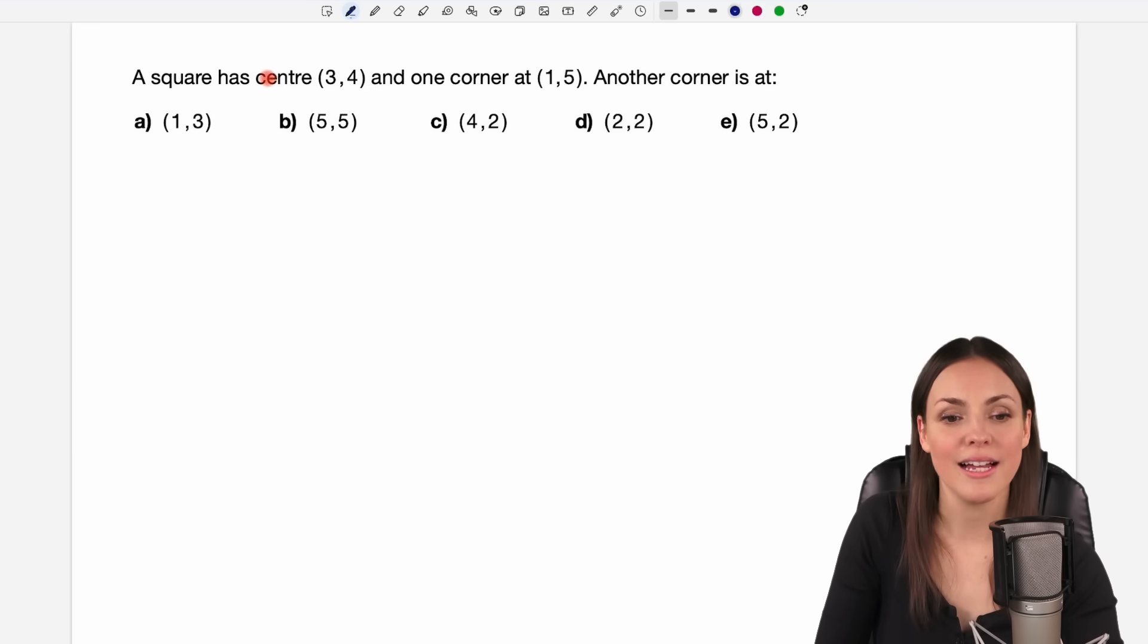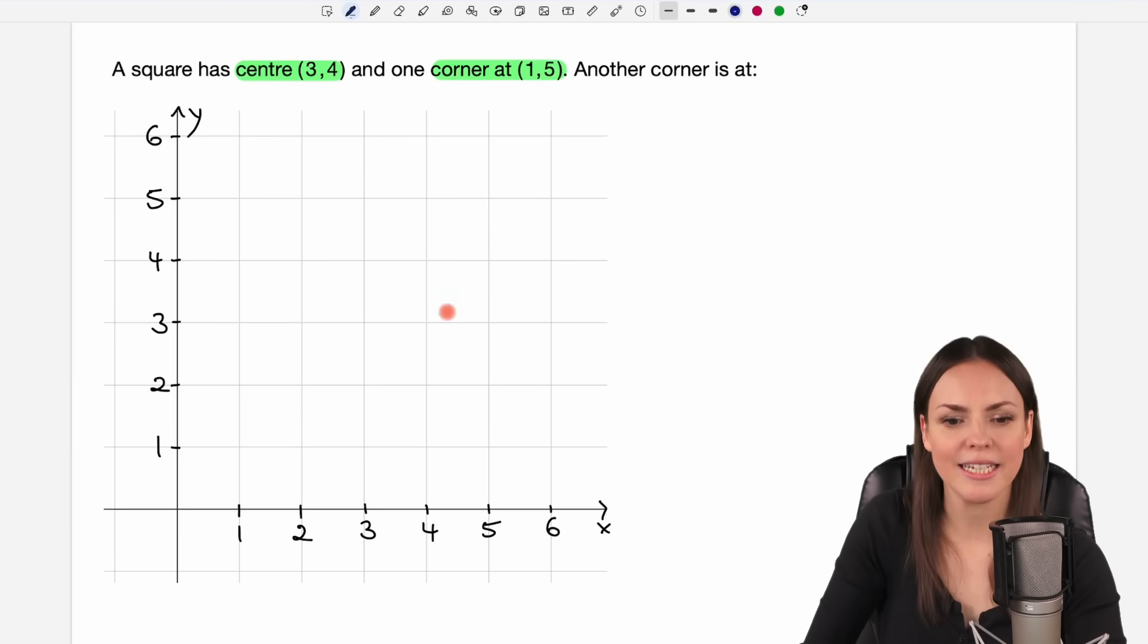A square has center (3,4) and one corner at (1,5). Another corner is at A, B, C, D, or E. So this is about a square. We get the center of the square and the coordinates of one of the corners, and we have to find the coordinates of another corner. Let's take a look at a coordinate system and the points we are given here.